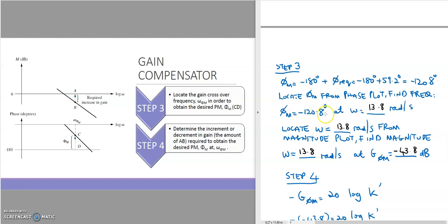Now, at the same frequency of 13.8 radians per second, we locate this on the magnitude plot and find the magnitude in decibels. From the magnitude plot, the magnitude value is negative 43.8 dB. In Step 4, the last step, we determine the increment or decrement in gain required to obtain the desired phase margin at the phase margin frequency.